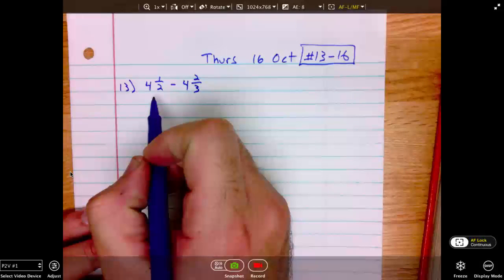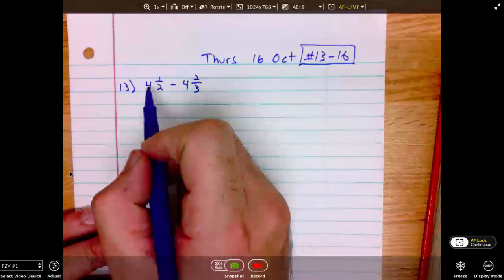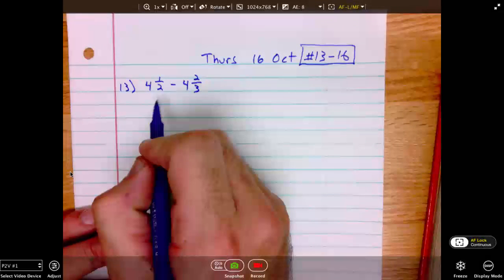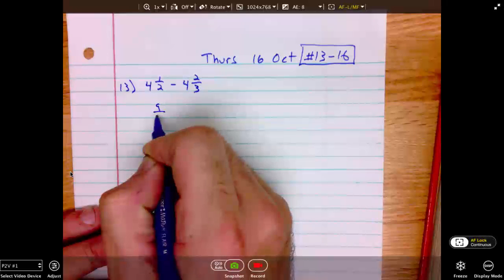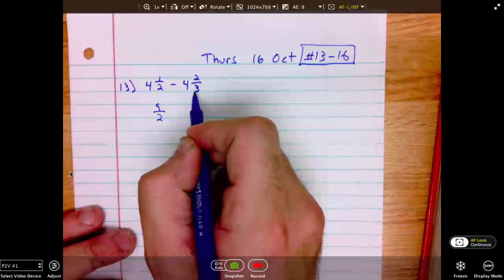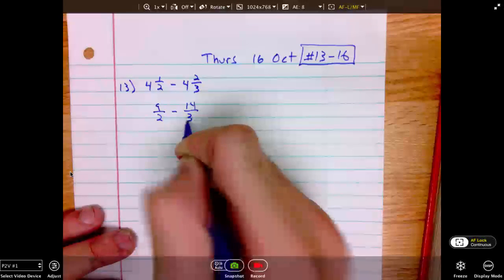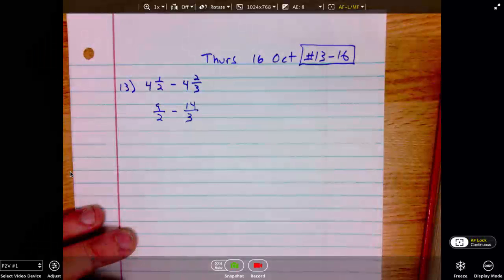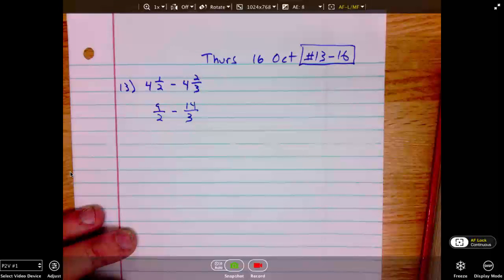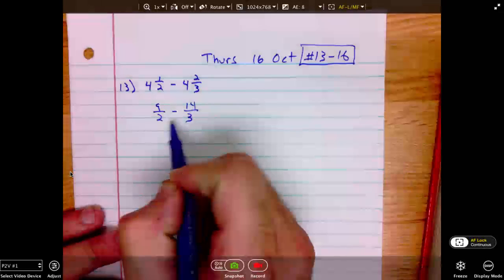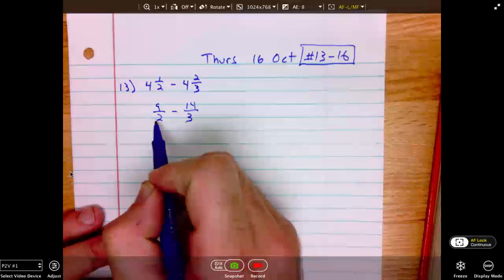We will first change to an improper fraction. 4 times 2 is 8 plus 1 is 9. 9 over 2. 4 times 3 is 12 plus 2 is 14. 14 over 3. We need a common denominator. The common denominator between 2 and 3 is 6.